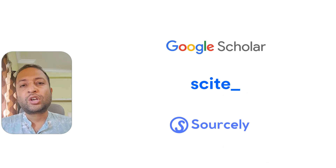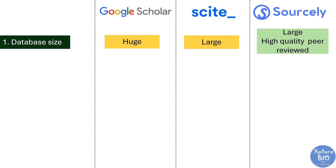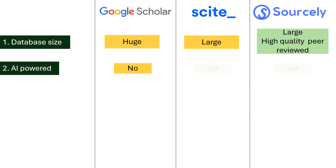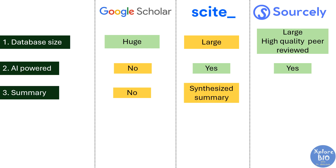Now let's compare these three tools side-by-side based on their key features so you can decide which is most suitable for you. If we talk about database size, Google Scholar definitely wins. But if you want only high-quality peer-reviewed research papers and reviews, Sourcely can actually be a better choice. Both Cite AI and Sourcely are AI-powered, making them much better for relevance-based searches. Google Scholar doesn't provide summaries — you have to read papers yourself. Cite AI generates synthesized summaries for specific statements or questions, while Sourcely gives you paper summaries and snippets in one place without switching tabs. For citation purposes, the summaries generated by Sourcely are more relevant.